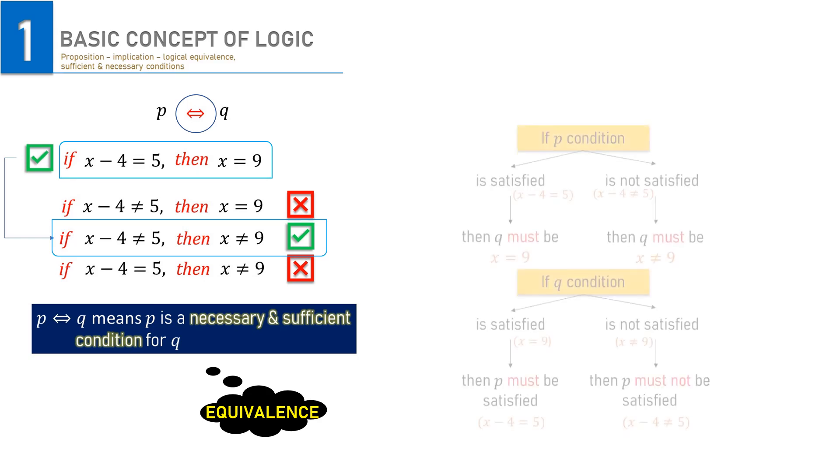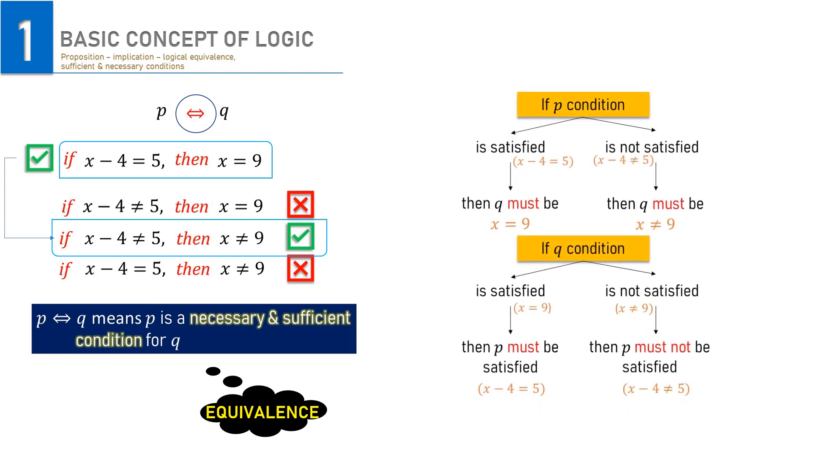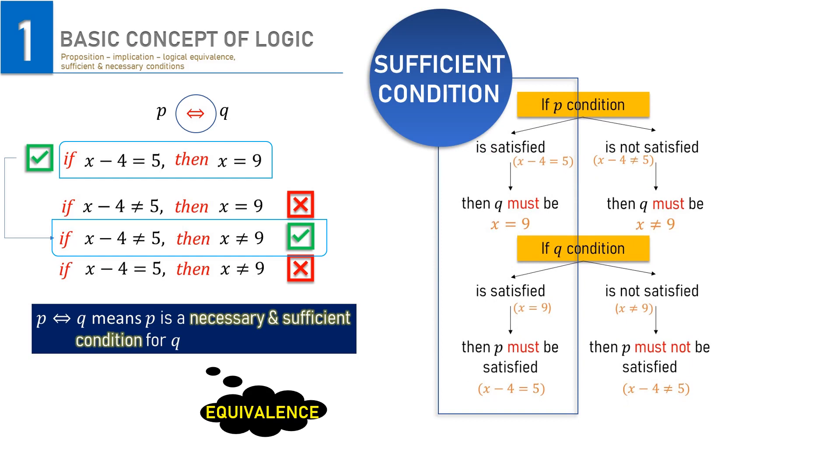How can we evaluate that P and Q are sufficient conditions for each other? We can easily observe from this condition again. The left side conditions clearly indicate why both P and Q are sufficient conditions for each other. We get certain conclusions when P or Q is satisfied. If x minus 4 is 5, then x must be 9. If x is 9, then x minus 4 must be 5.